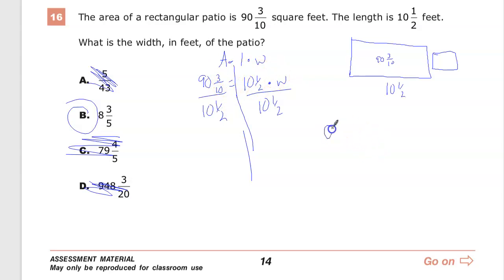So they want you to do 90 and 3 tenths divided by 10 and 1 half. So I'd have to convert. This would be 90 10 over 10s plus 3. So 10 times 90 is 900 plus 3 is 903, and then that's over 10. And then this is 10 and 1 half. So it's 10 2 over 2s plus 1. So 2 times 10 is 20 plus 1 is 21.